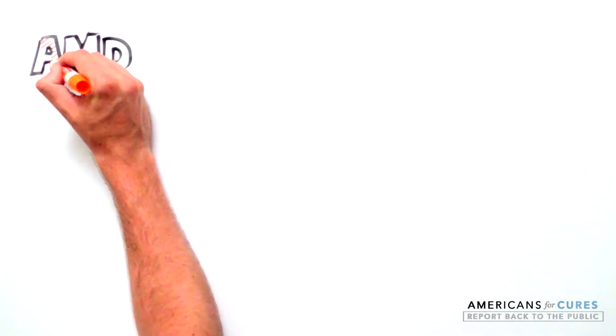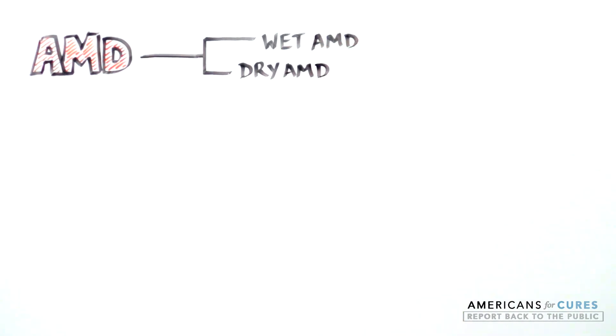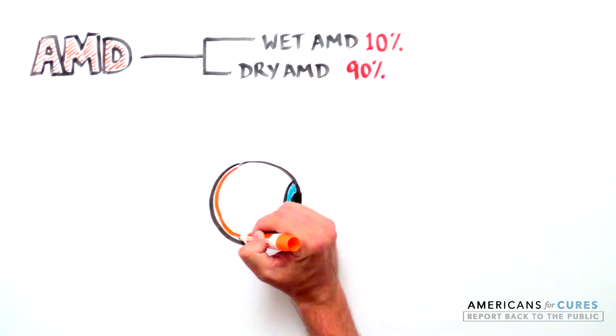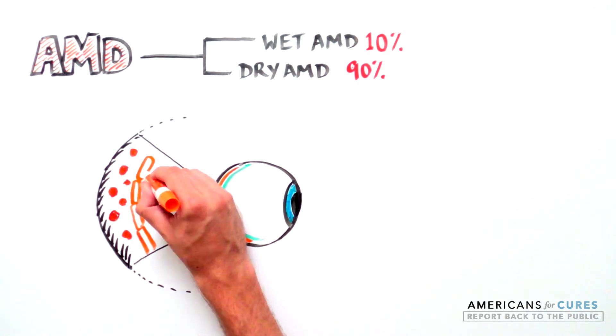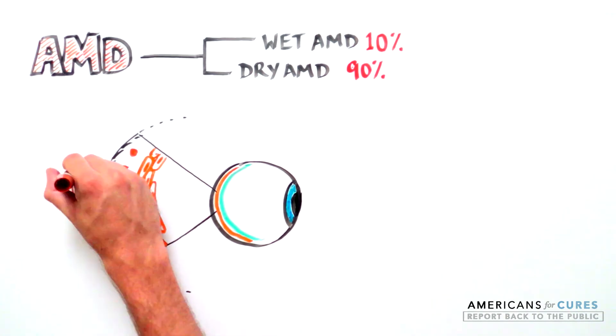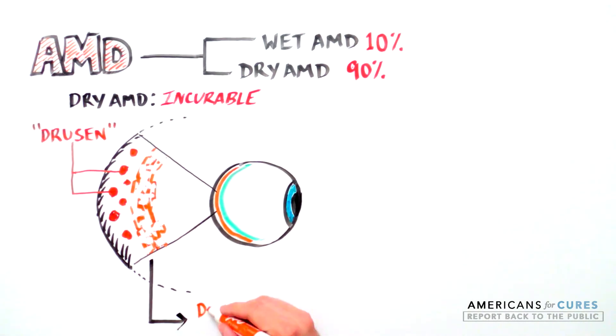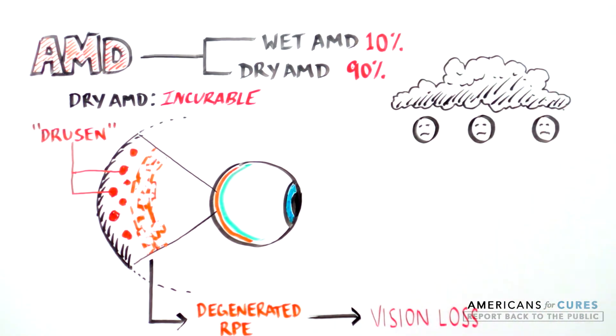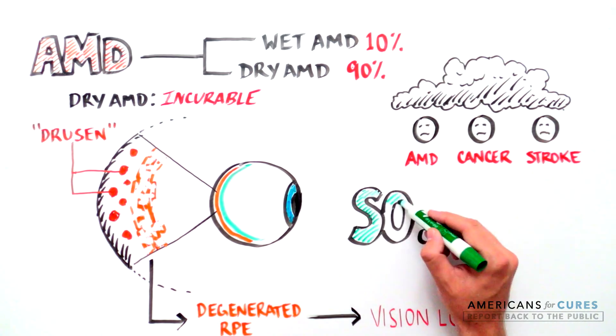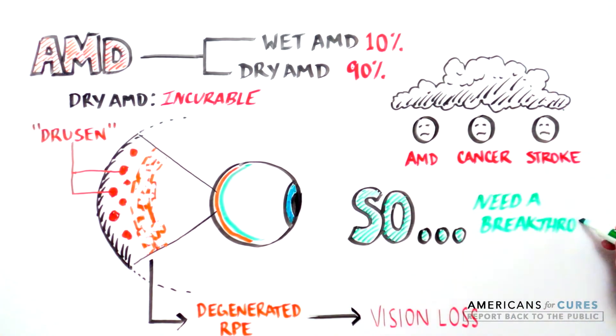There are two types of AMD, wet and dry AMD. Dry AMD affects 90% of patients with AMD. It is caused by a breakdown or thinning of the RPE cell layer and is usually characterized by the presence of small yellow crystalline deposits called drusen. Dry AMD is currently incurable and visual impairment and blindness can have a disproportionate impact on people's perception of their quality of life, often compared to that of patients with advanced cancer, intractable pain or stroke patients. These patients have endured a traumatic experience and need a breakthrough therapy to restore their quality of life.